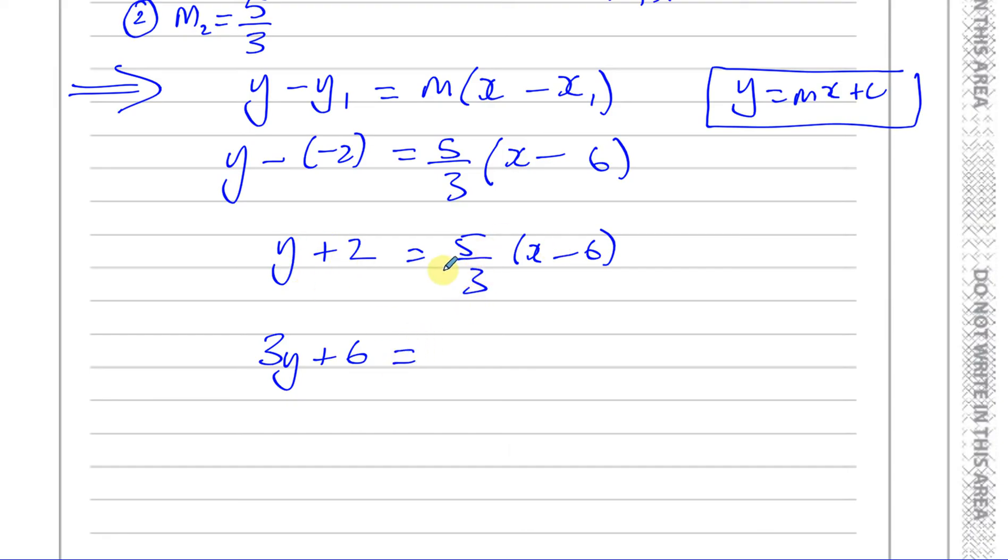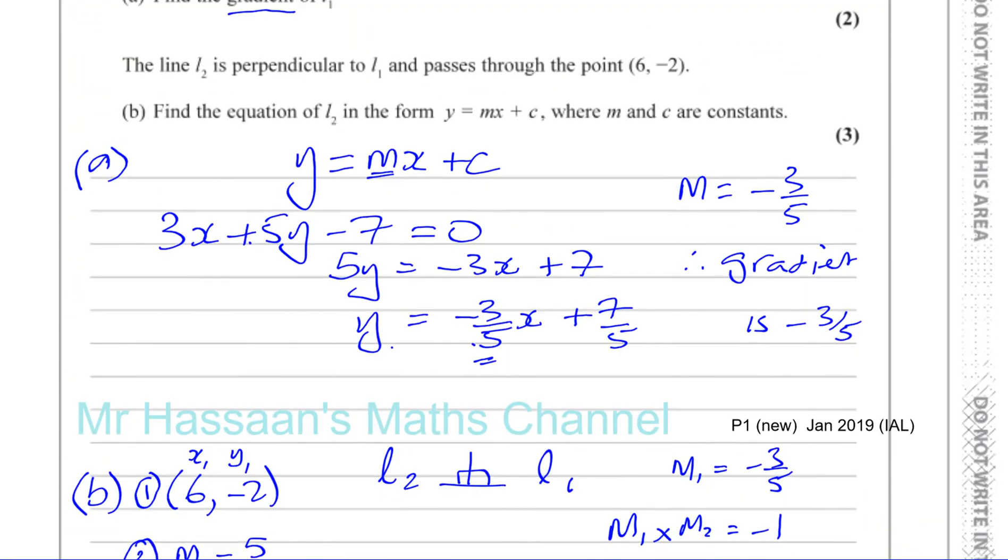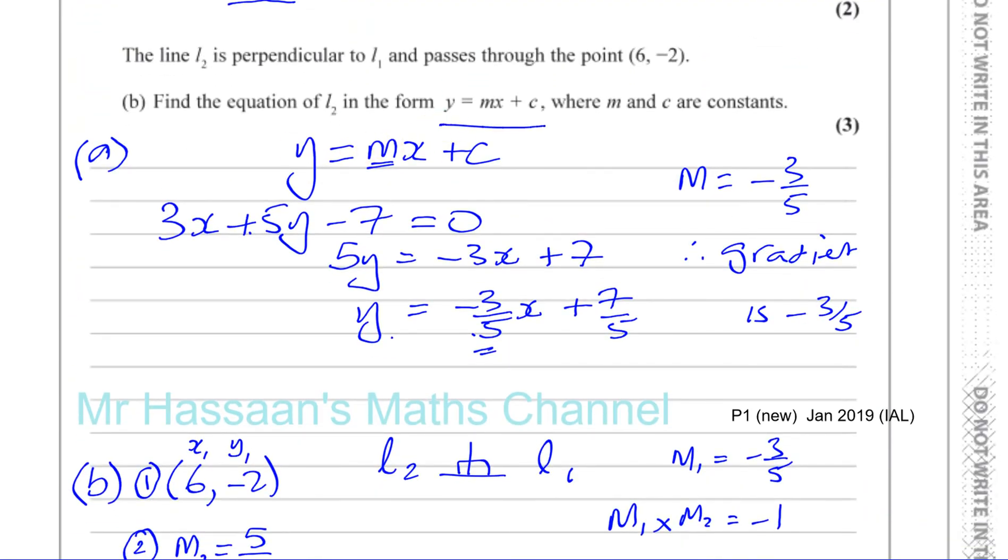And I'm going to expand the bracket here without the 3, because we've multiplied by 3. I'm just going to expand this bracket, so 5 times x is 5x and 5 times minus 6 is negative 30. And they've asked us to give the equation in the form y equals mx plus c, so we've got to write y as the subject of the formula.